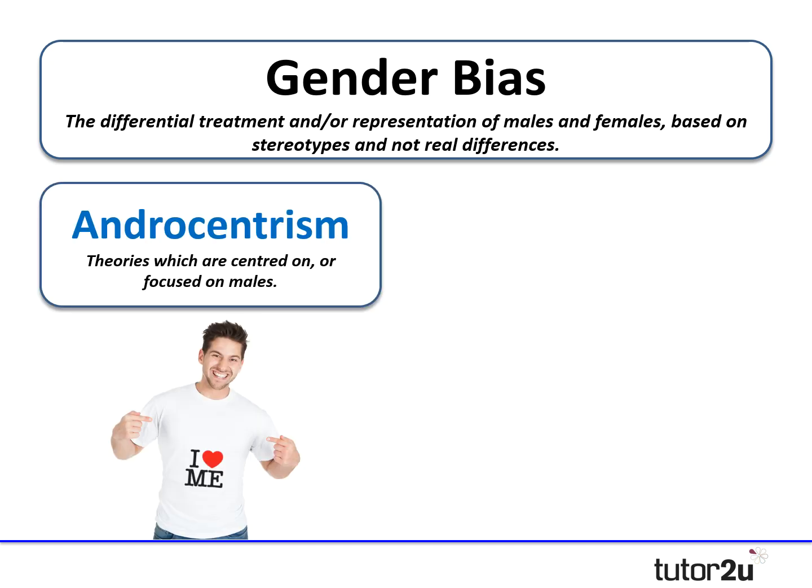Within that, there are two broad terms. Androcentrism is something we typically find in psychology. Psychology has been a very male-dominated field for many years, and most of the psychologists you will come across in textbooks will typically be males. As a result, there's a tendency for psychological research to suffer from androcentrism, which is where the theories themselves or the research is focused on a male-orientated view of the world. So if someone has a male perspective of the world, that would be an androcentric view.